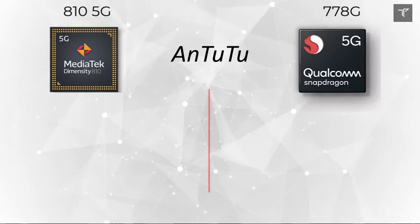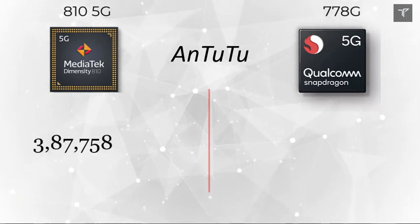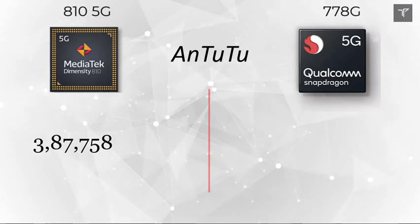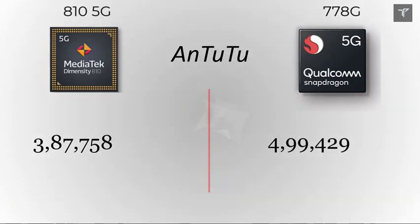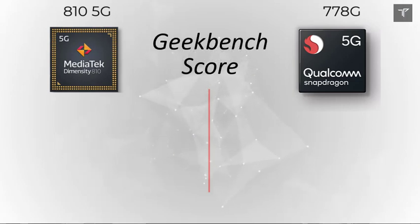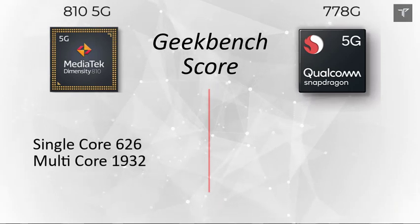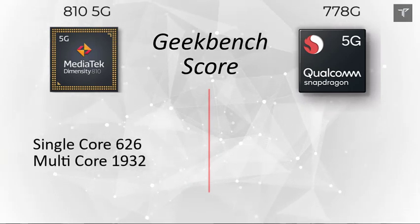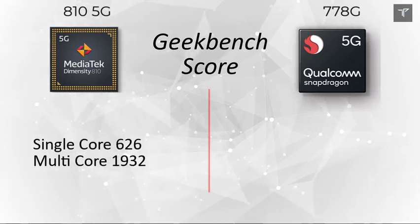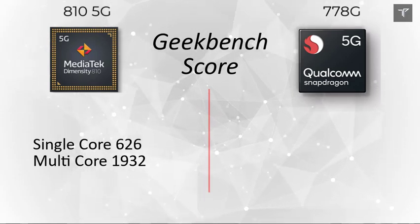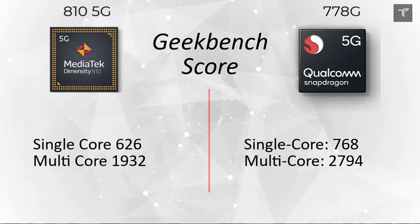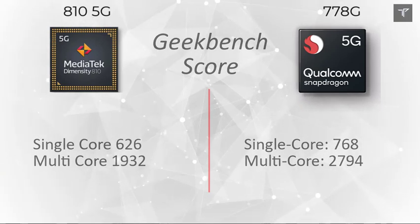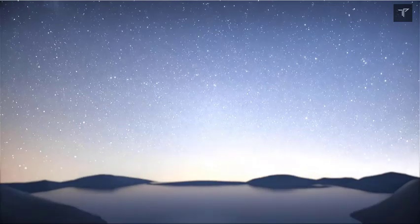Closing with benchmark scores, the MediaTek Dimensity 810 scores around 387,000 on AnTuTu, whereas the Qualcomm Snapdragon crushes it with a score of around 500,000. On Geekbench, the MediaTek scores 626 single-core and 1932 multi-core, while the Snapdragon scores 768 single-core and 2800 multi-core.